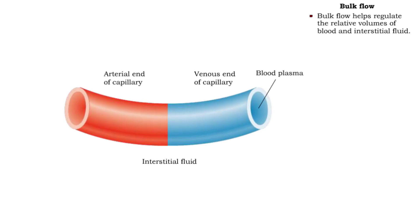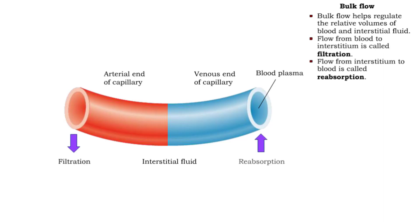Bulk flow plays an important role in regulating the relative volumes of blood and interstitial fluid. It does this by balancing specific pressures. Bulk flow is given two names, depending on the direction of movement.